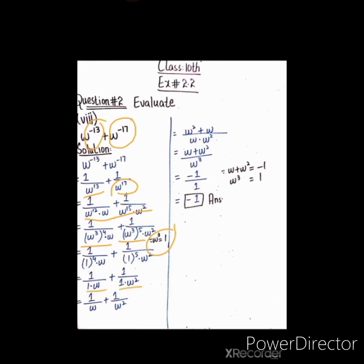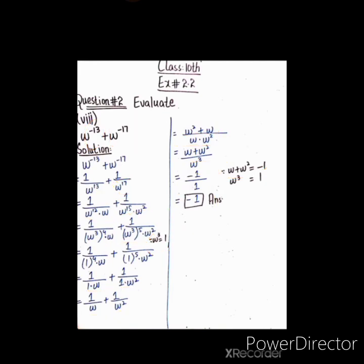تو یہ بن جائے گا 1/ω + 1/ω²۔ LCM لیں: ω × ω²۔ numerator میں ω² + ω آ جائے گا۔ ω² + ω = -1 اور ω × ω² = ω³ = 1۔ تو answer کیا آئے گا: -1/1 = -1۔